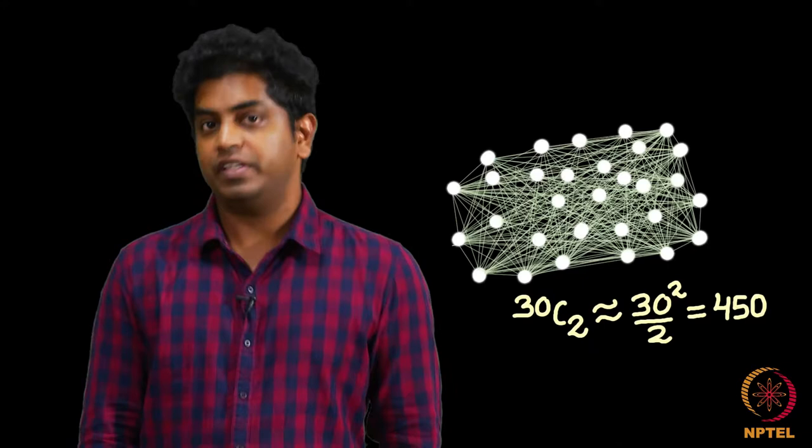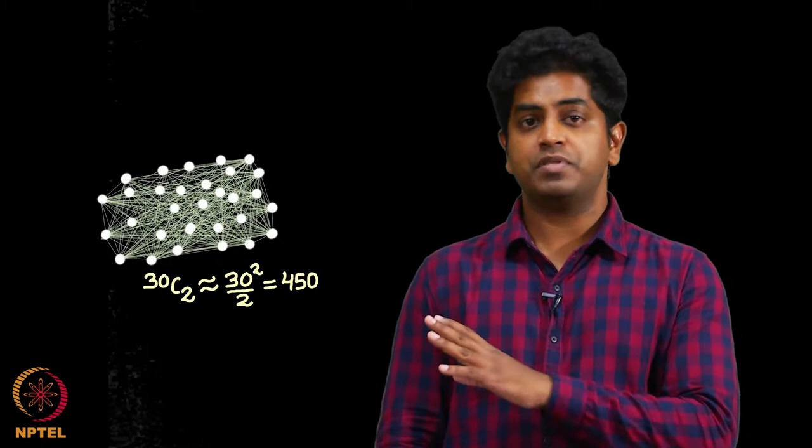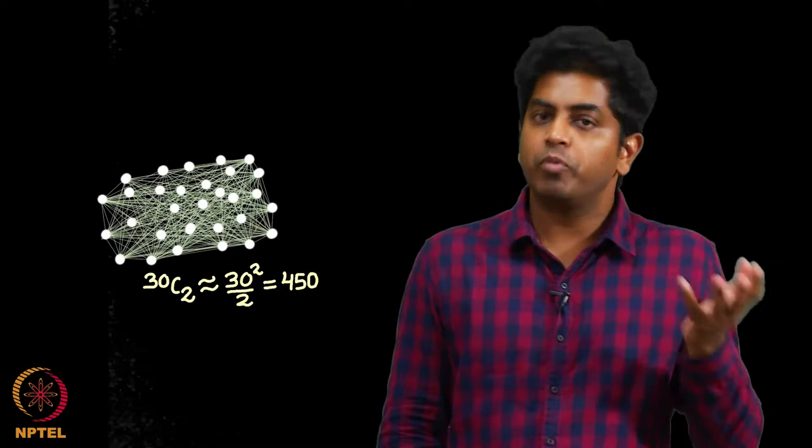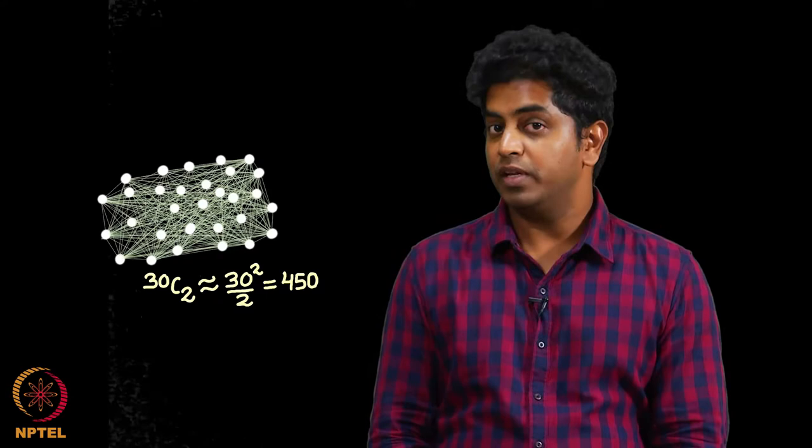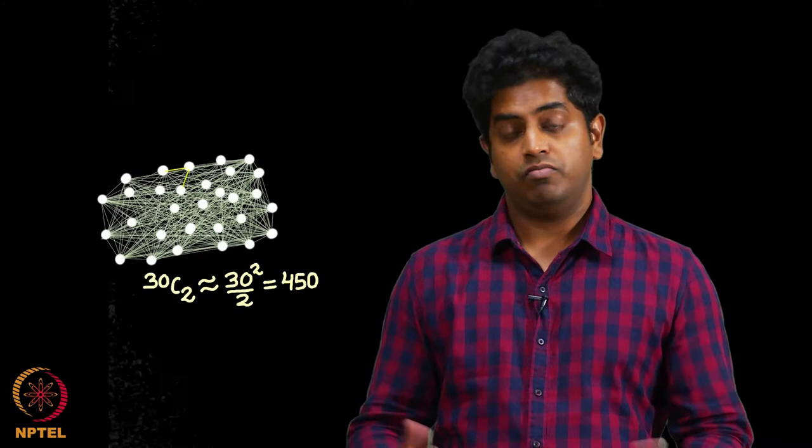Out of these 450 friendships that you are seeing, some of them can be positive, some of them can be negative. Observe carefully. Here is a graph with 30 nodes, 30 people and roughly 450 friendships, which can be positive and negative.